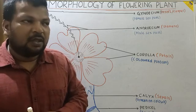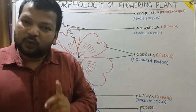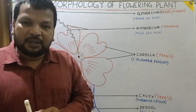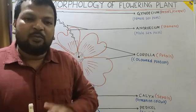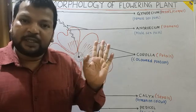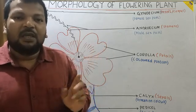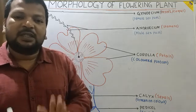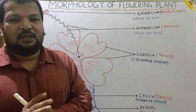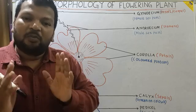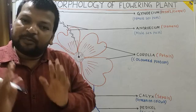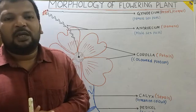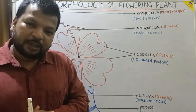In this chapter, we will study root, stem, leaf, fruit, and seed. The flower is the reproductive part of the plant. With the help of the flower, the plant reproduces.